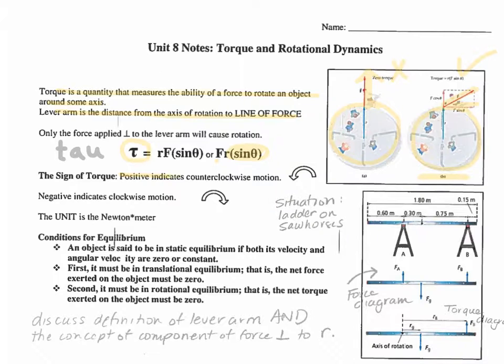A positive torque indicates counterclockwise motion, just like on the unit circle. A negative torque indicates clockwise motion. The unit for torque is the newton meter. This is not a joule. It's a newton times a meter, and that's because the situation is different than the situation that creates work. This situation is always all about rotation.